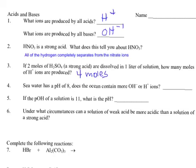Seawater has a pH of eight. Does the ocean contain more OH or H ions? In this case, the answer is it contains more OH.